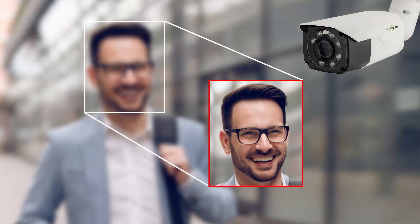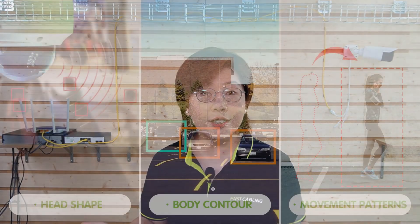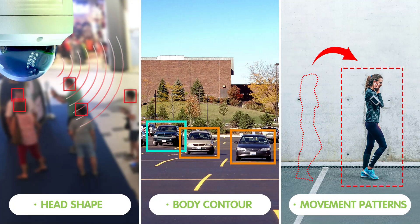So now let's break down how this works. Human detection technology often includes facial recognition capabilities, enhancing its precision. The system uses complex algorithms to analyze the captured video feed for human characteristics such as head shape, body contour, and movement patterns.